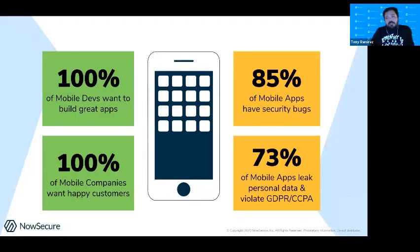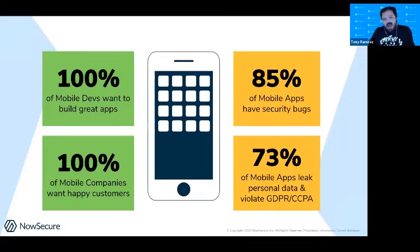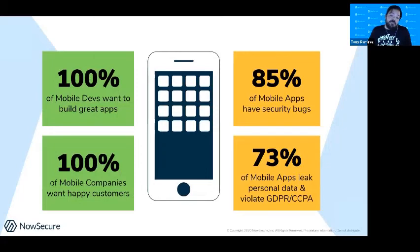A lot of the analysis we do on app stores found about 85% of apps have at least one security flaw. We've also found about 73% have some privacy flaw that conflicts with GDPR or CCPA. That's really huge.